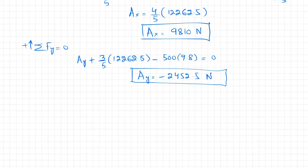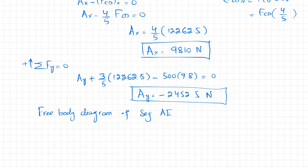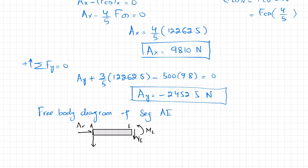Now we find the internal loading at cross section E. We draw the free body diagram of segment AE by cutting the beam at E. On the left segment we have A_x acting horizontally, A_y acting downward, and at the cut face: shear force V_E, internal moment M_E, and axial (normal) force N_E.